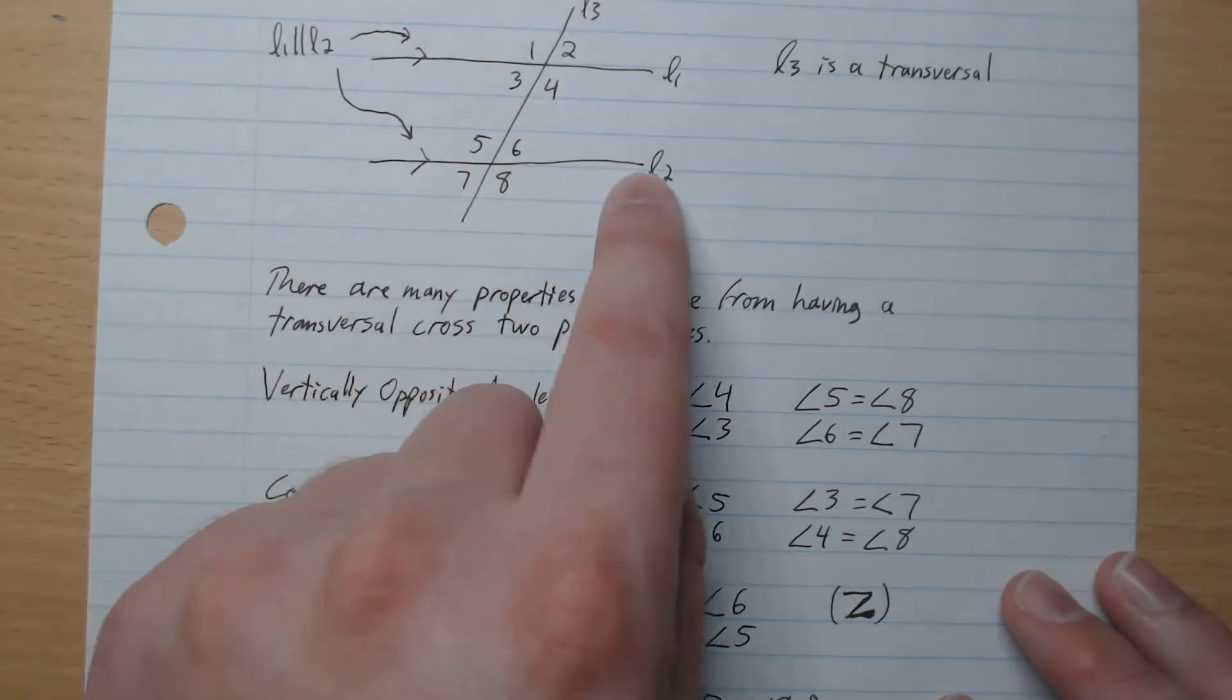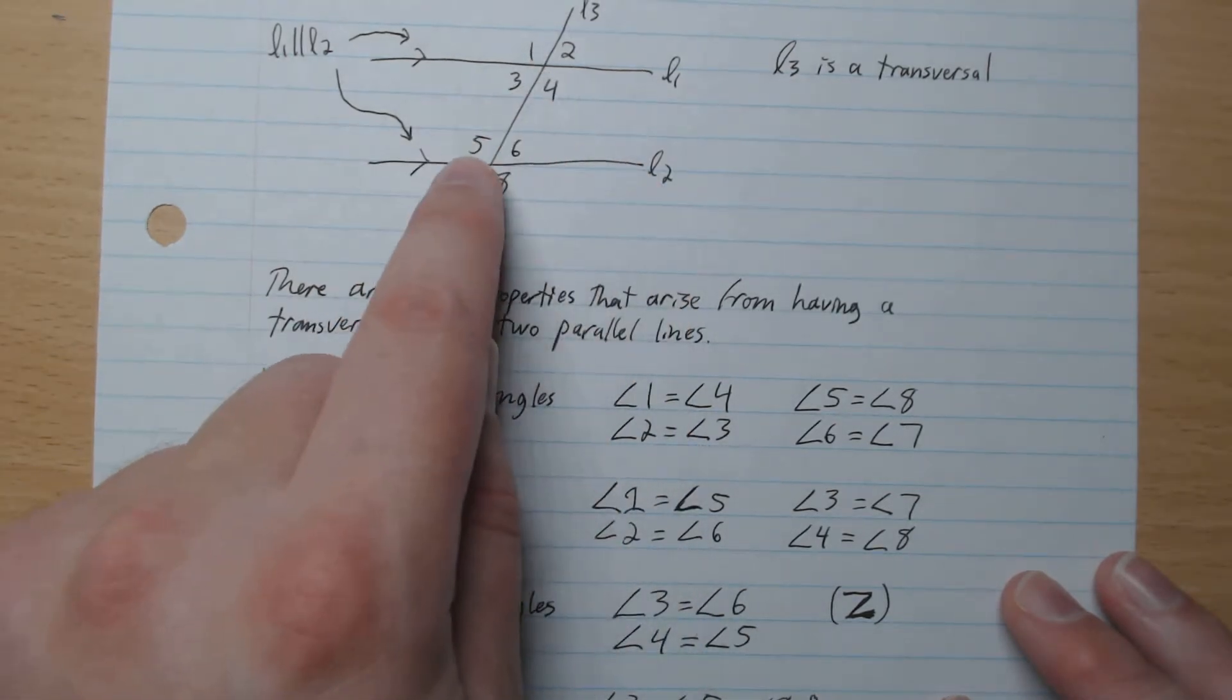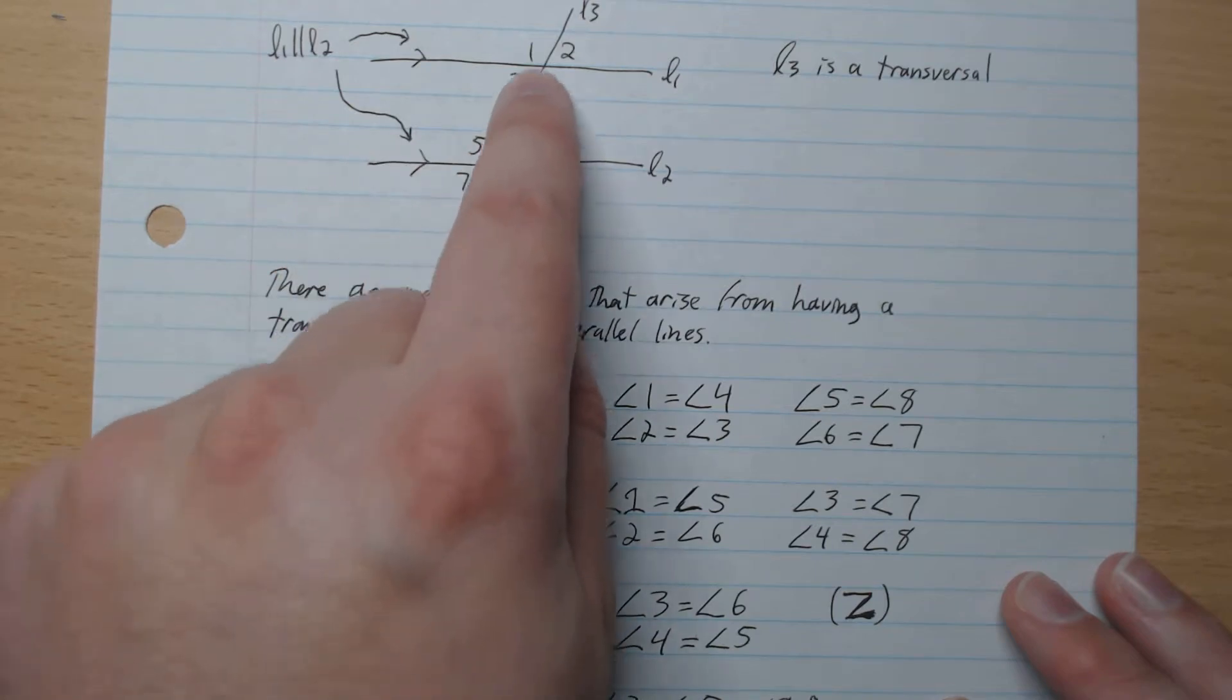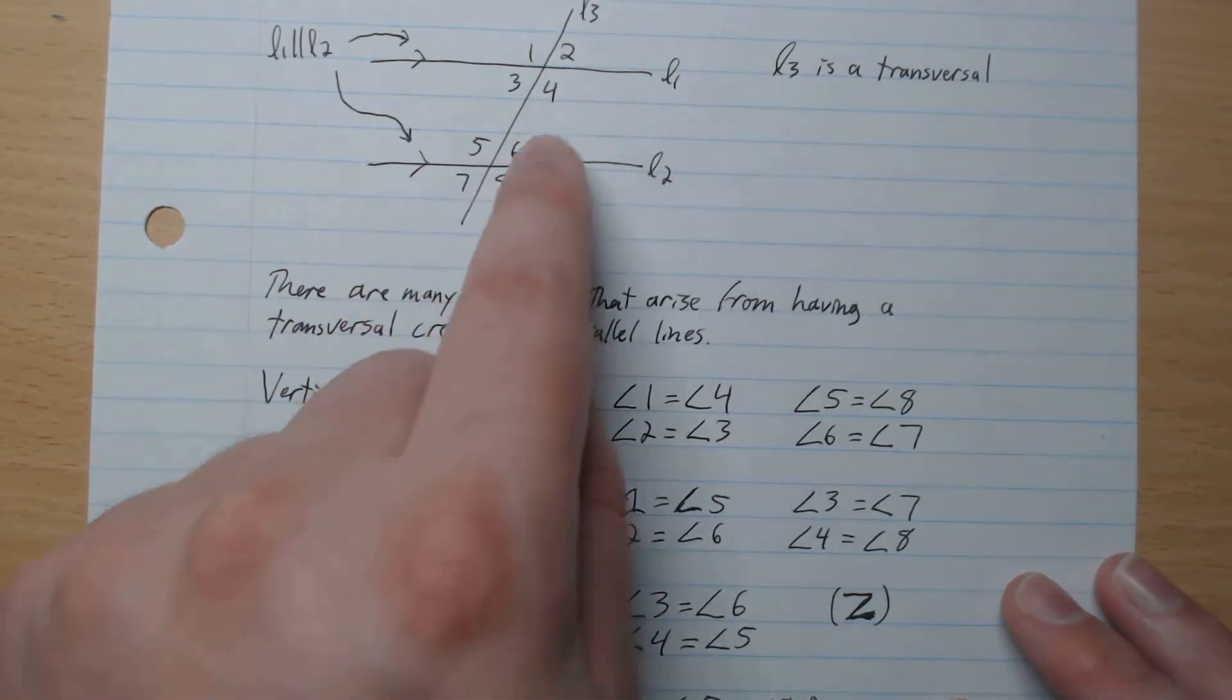Here we have a little Z like that, 3 and 6. And then 4 and 5 are also equal. Like this, like that. 4 and 5.